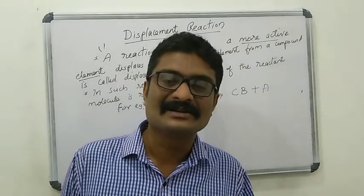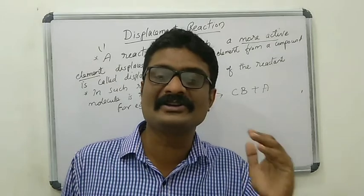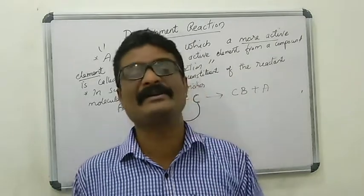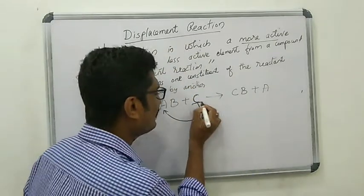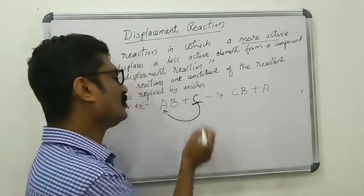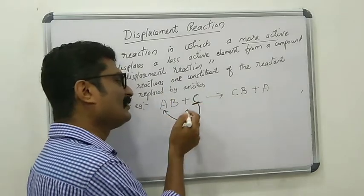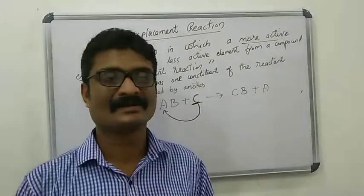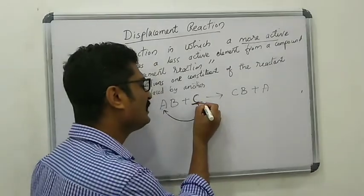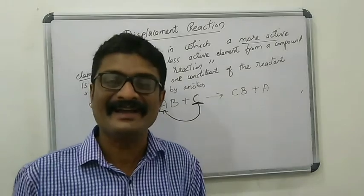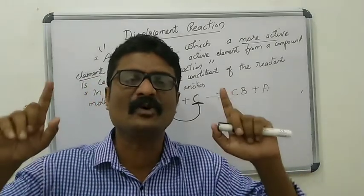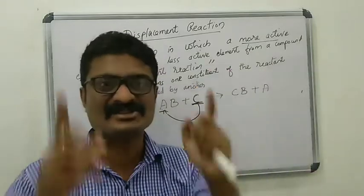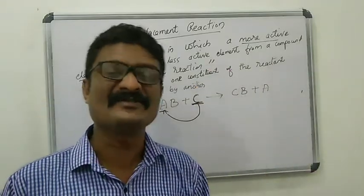C is much more reactive or more active than A. The element C can displace the element A under the condition when both of them are metals or both of them are non-metals. This is the criteria of displacement.